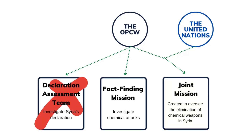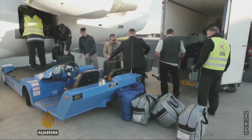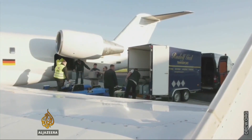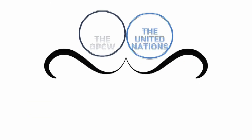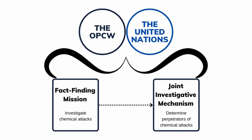The Declaration Assessment Team failed to resolve all the problems with Syria's declaration; Syria has still not submitted an accurate and complete declaration according to the Chemical Weapons Convention. The Fact-Finding Mission confirmed chlorine and mustard gas were used in Syria and submitted its reports to the UN. The OPCW-UN Joint Investigative Mechanism was set up to follow up on the FFM's discoveries and determine the perpetrators of the chemical attacks, with reports released in 2021 concluding that the Syrian Arab Air Force used chemical weapons.